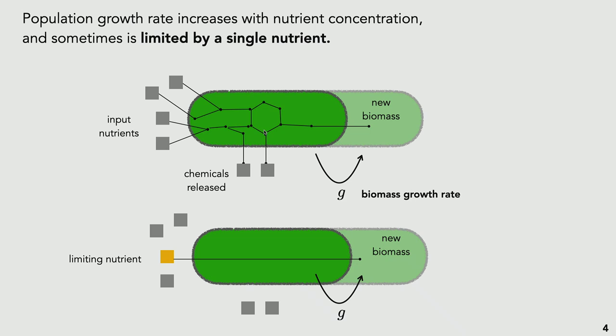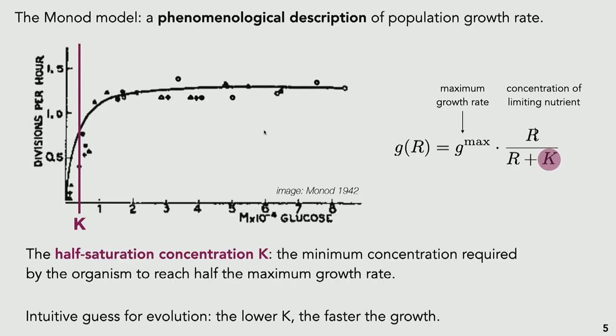Growth is a complicated process inside the cell with many inputs. There is a special scenario where the entire process is limited by a single nutrient — this is explicitly what you construct in a lab experiment with M9, where you supply all other essential nutrients like phosphate and nitrogen at high concentrations, so glucose becomes the limiting nutrient. This allows you to describe the entire growth as a function of one concentration, which leads to the model Monod described in 1942 in his PhD thesis.